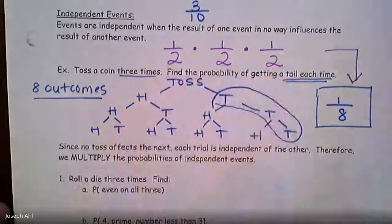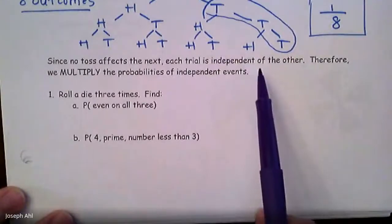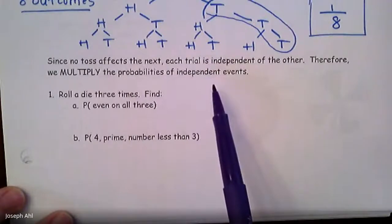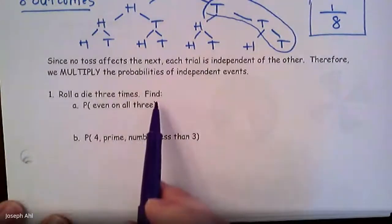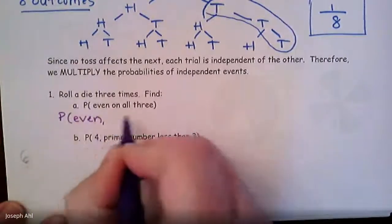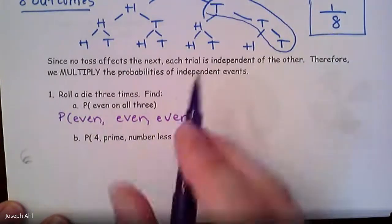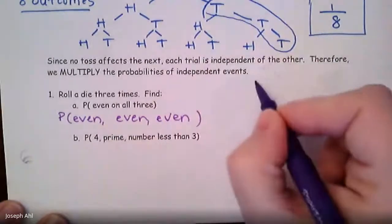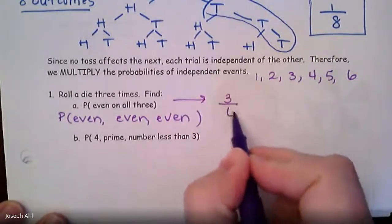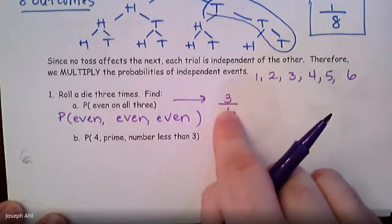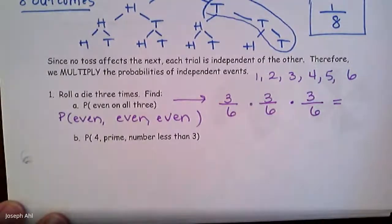It didn't have to be that we were getting tails each time. Let's take a look at rolling a die, another classic probability example. Since no toss affects each other, we multiply the probabilities of independent events. When I roll a die, whatever happens on the first roll does not affect the second roll. Roll a die three times — what's the probability of getting even on all three? The probability of getting an even number when rolling a die: the numbers are one through six, and half of those are even. Using a denominator of six since there are six possible outcomes, three out of six are even. Rolling again, probability of even is still three out of six, and the last time still three out of six.